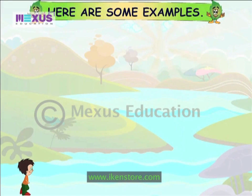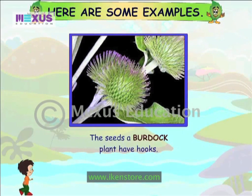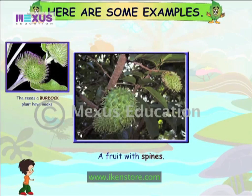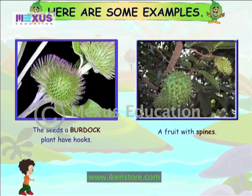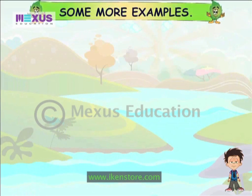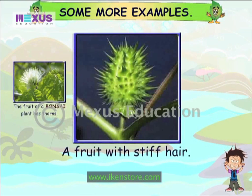Here are some examples. The seeds of a burdock plant have hooks. A fruit with spines. The fruit of a plant has thorns. Here is a fruit with stiff hair.